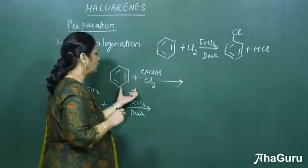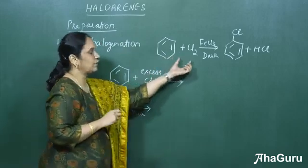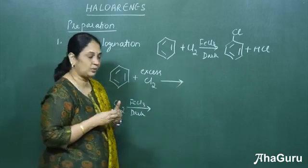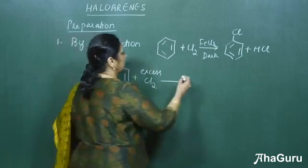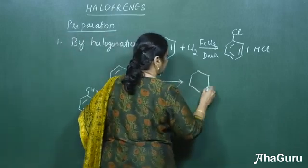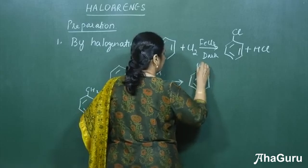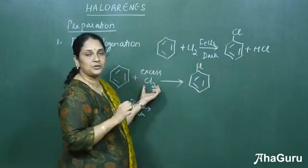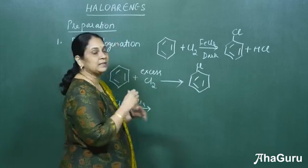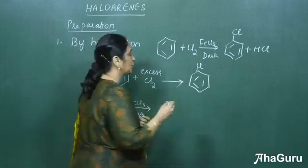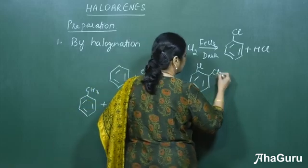Next, if we use excess chlorine instead of just having one molecule of chlorine, what will happen? First, it will form chlorobenzene. Because we have used excess chlorine, the other chlorine can also get added to the ring, so we will get dichlorobenzene.